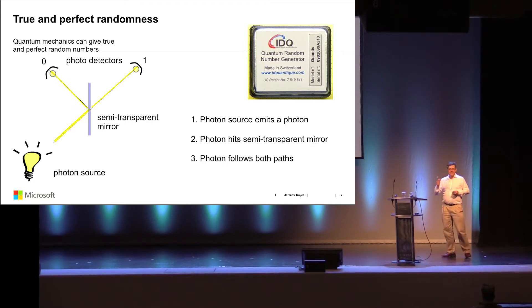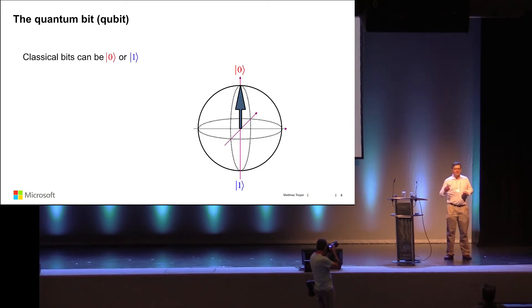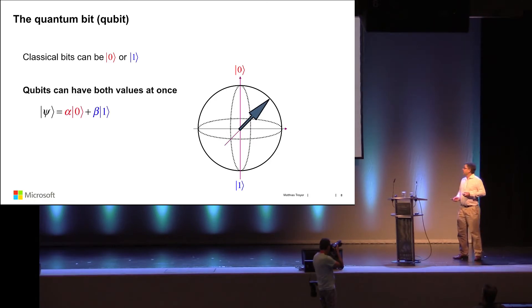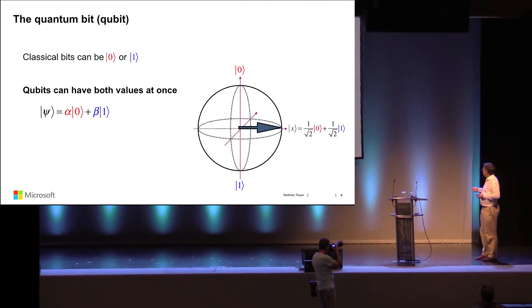We want to use that for computing. While a classical bit can be zero or one, the photon here, if I view it as a quantum bit, is taking both paths, so it's in a superposition of being zero and one. I can view that as a state on a sphere. The north pole is the classical zero, the south pole is the classical one. The classical bit can only be zero or one. The quantum bit can point anywhere on the sphere. For example, to the right, that would be a superposition of zero plus one with equal weights. But it can point anywhere with any complex amplitudes.